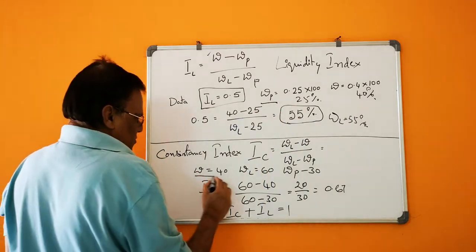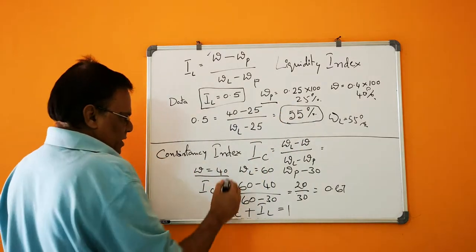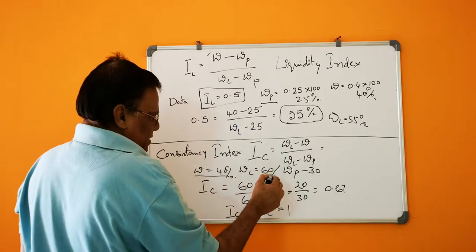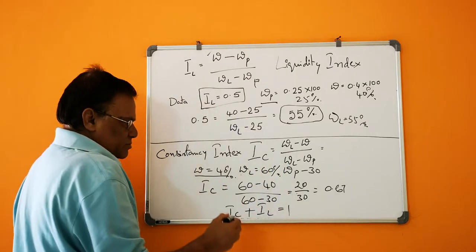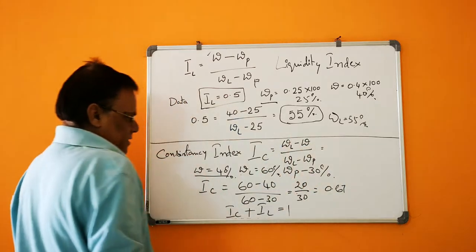So natural water content is 40 percent, and liquid limit is 60 percent, and plastic limit is 30 percent.